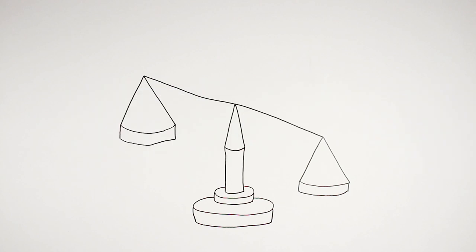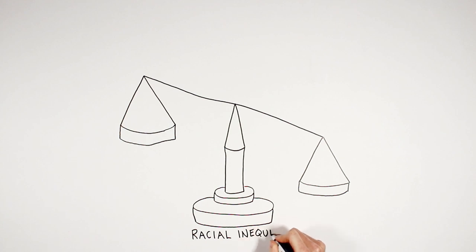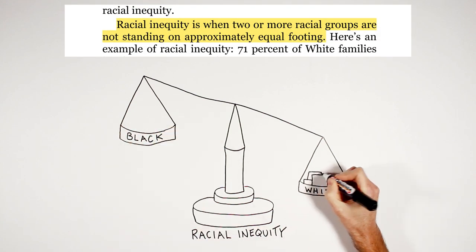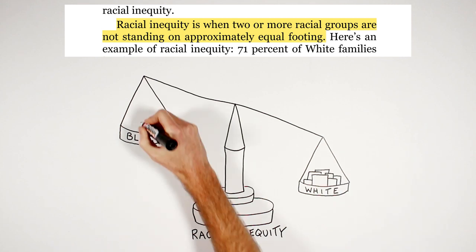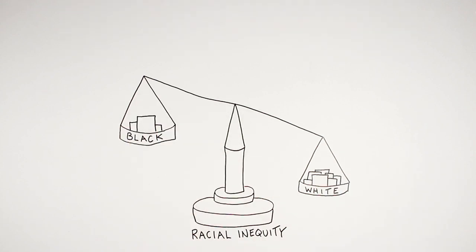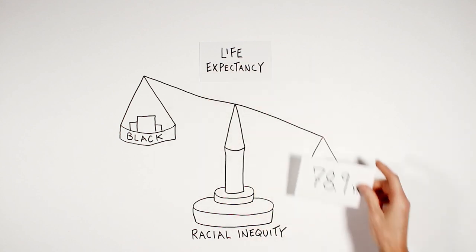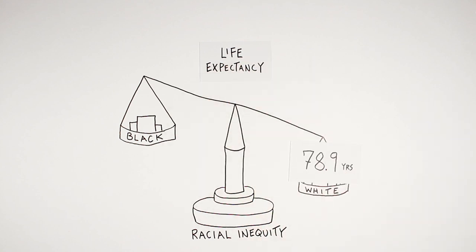So I'm going to try to bring some of those definitions together into this diagram here, starting with the definition of racial inequity, which is when two or more racial groups are not standing on approximately equal footing. Kendi shares a couple of health-related examples: the fact that the life expectancy of the average white person is 78.9 years, whereas for the black person it's 75.4 — that's three and a half years of life on average for every single person.